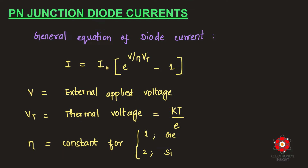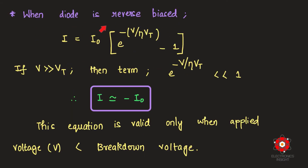Let us have a quick recap on PN junction diode currents. The general equation of diode current is: total diode current equals the reverse saturation current I₀ (contributed by minority charge carriers) multiplied by [exp(V / η·Vt) − 1], where V is the externally applied voltage, η is a material-dependent constant (1 for germanium, 2 for silicon), and the thermal voltage Vt = kT/q, where k is Boltzmann's constant, T is temperature, and q is electronic charge.